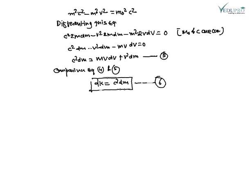Now consider that the body is initially at rest. By application of force it acquires velocity v, and its mass increases from m₀ to m. The total kinetic energy acquired is found by integrating: K equals the integral from m₀ to m of c²·dm, which gives K equals c²(m minus m₀). This is equation number seven.